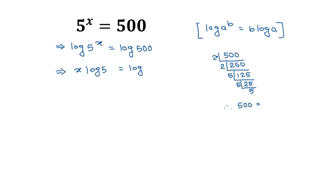From the prime factorization, 500 can be written as 2 squared times 5 to the power 3, that is 2² × 5³. So we rewrite log of 500 as log of 2 squared times 5 cubed.